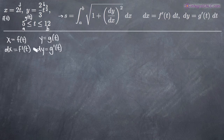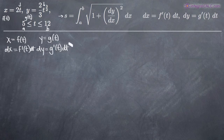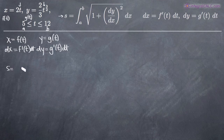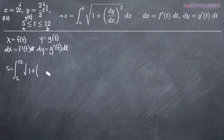These are going to be f prime of t dt and g prime of t dt, because we took the derivative with respect to t, so we've got to add that dt. We're going to use these values to plug in for dy and dx into our integral. So we're going to take the arc length from 5 to 12, and take the square root of 1 plus the quantity dy over dx. To find dy, we need to take the derivative of our y equation: y equals 2/3 t to the 3/2.